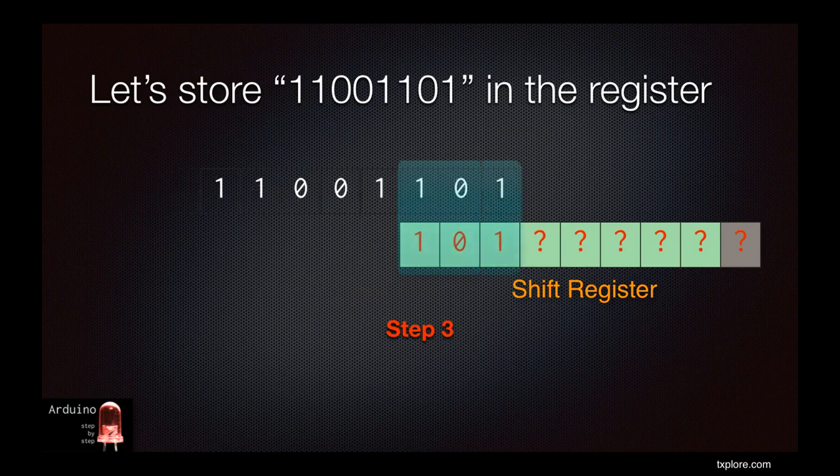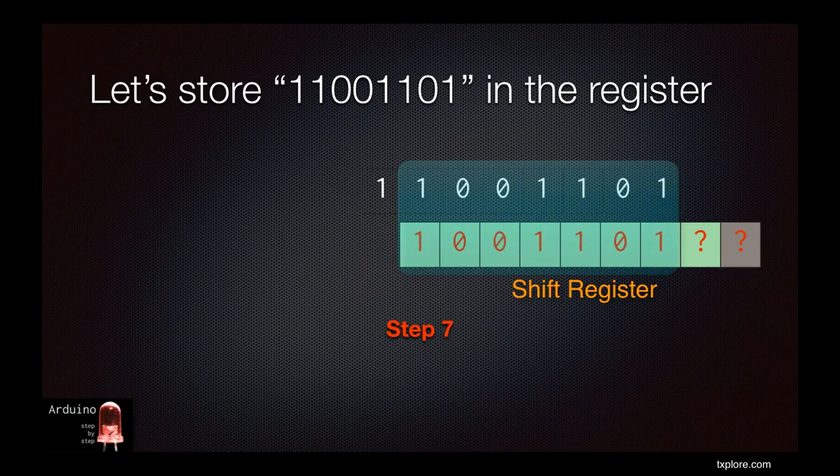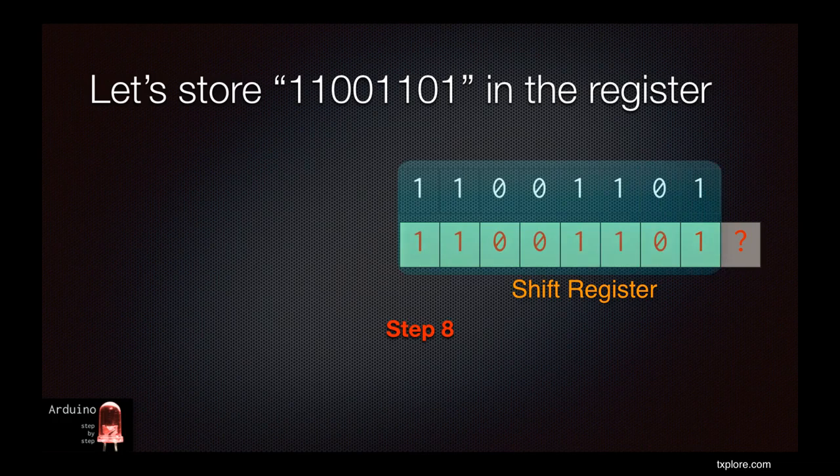The same process continues, step number 3, step number 4, step number 5, 6, 7, and 8. And now we have the complete byte stored inside the shift register.